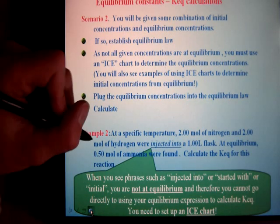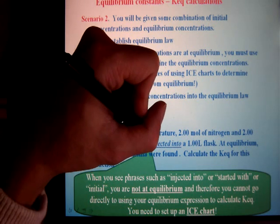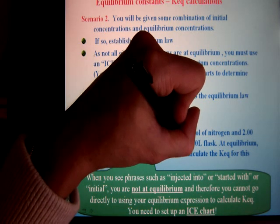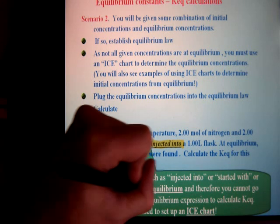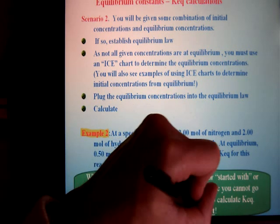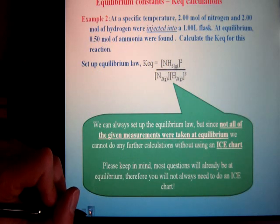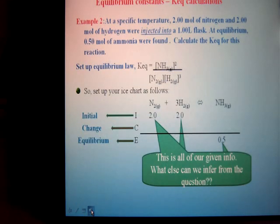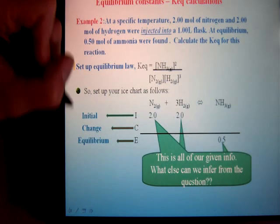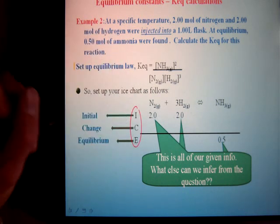Now in this scenario, notice it's saying moles of hydrogen were injected into a flask. What's that mean? That means we're not at equilibrium. And if we're not at equilibrium, we've got to figure out our equilibrium values, which means we need to use what we call an ICE chart. They're not too bad. Same as before, we want to set an equilibrium law because at some point we're going to have to use it. And then we have what we call our ICE chart. ICE: Initial, Change, Equilibrium.